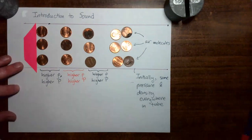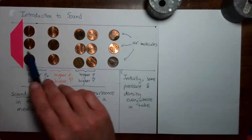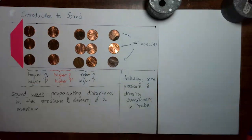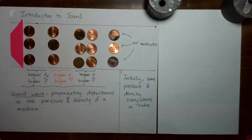A sound wave is a propagating disturbance to the pressure and density in the medium. In the example of a sound wave that I showed you here, it was a high density, high pressure disturbance which propagated through the medium. A region in a sound wave where the pressure and density of the medium are higher than normal is called a compression.